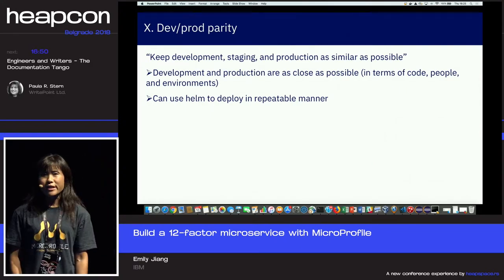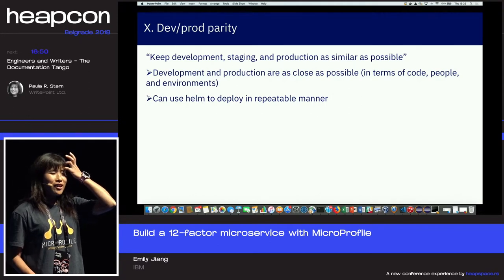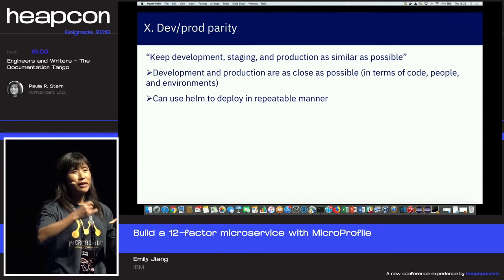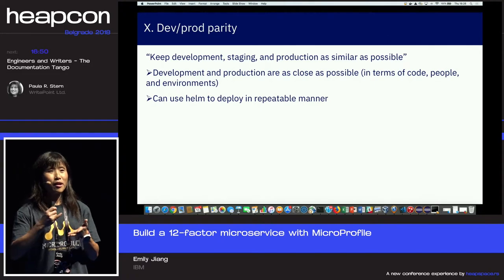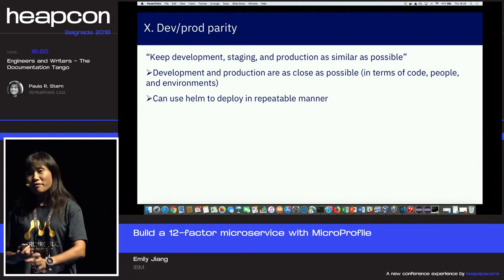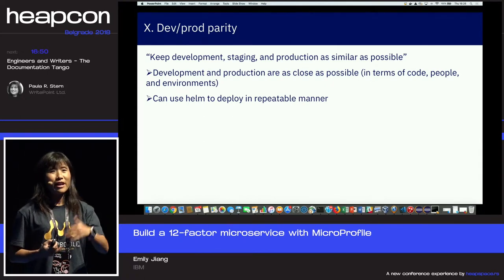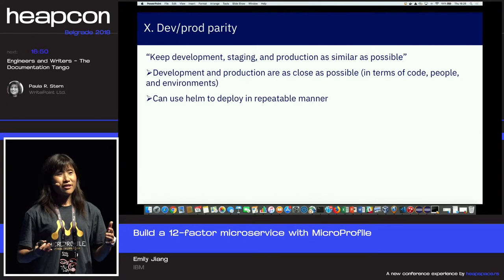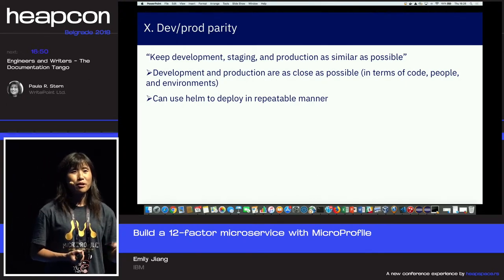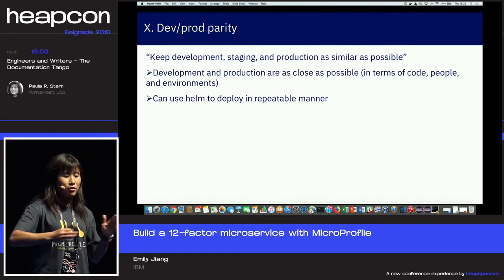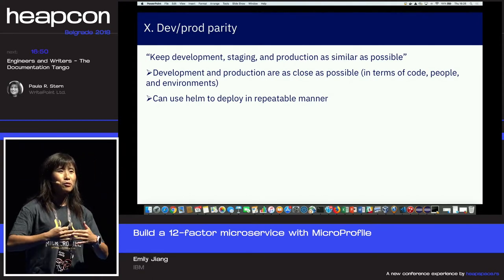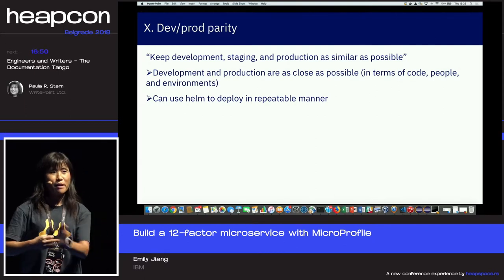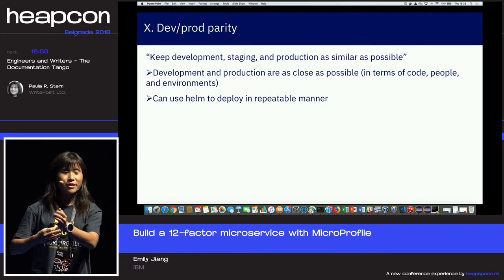The tenth factor is Dev/Prod Parity. In the old monolith world we had separate development, testing, and production teams. A developer would hand over code to the tester, the tester would say it's not working, and the developer would say 'it works on my machine.' In the microservice world, we no longer accept that answer. We try to keep the same people doing all things — development, testing, and production — and we make sure the environments are the same across development, testing, and production. No surprises.